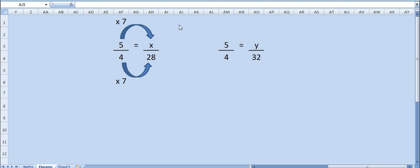Firstly, separate both the fractions. 5 upon 4 equals to x upon 28, one equation, and 5 upon 4 equals to y upon 32, another equation.